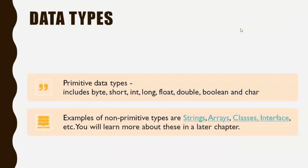Let's understand data types. Data types define what type of data you will be using in your program. When you use a number like 10, you use integer. In Java, we have two types of data types: primitive and non-primitive. In short, primitive can store one value at a time, while non-primitive can store more number of values.